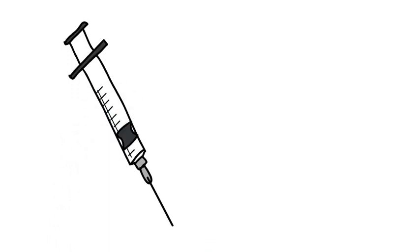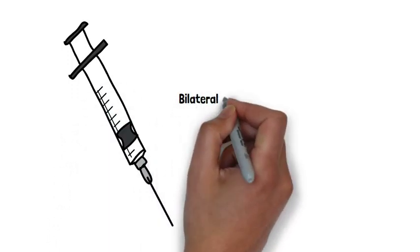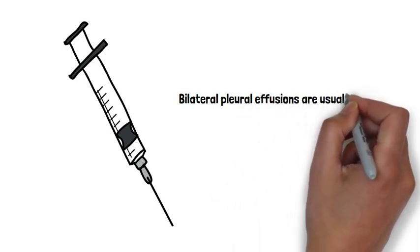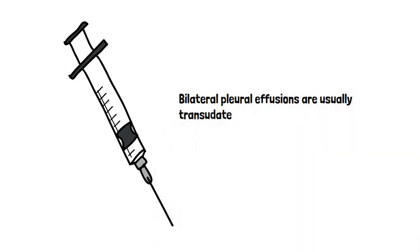We'd like to aspirate the fluid to find out. However, as a rule of thumb, if a pleural effusion is bilateral, it tends to be transudate.